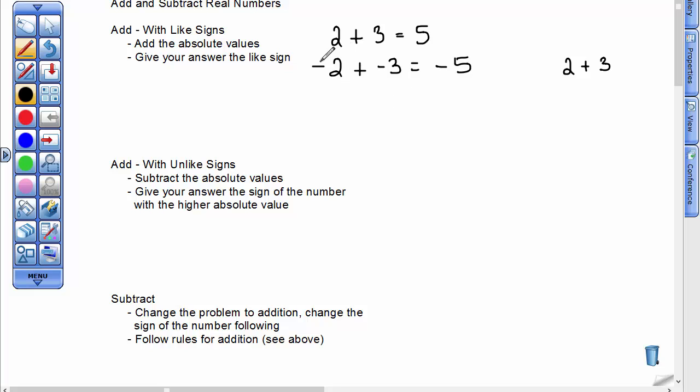Think of it in terms of money. You have $2 of debt, and you're going to add to that $3 of debt, and you now have $5 of debt. I kind of find adding with like signs pretty simple, because they're similar items, and you're just cumulating them up again, but you've got to put your sign on.